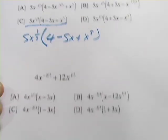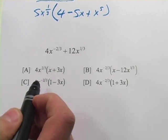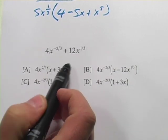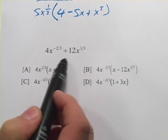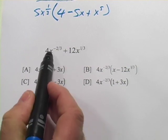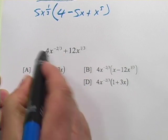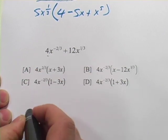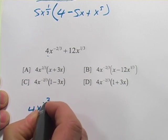Let's try one more like that. We've got 4x to the negative 2/3 plus 12x to the 1/3. So this one might be a little confusing because there's a negative exponent up here. Let's see what would happen if we tried to factor out this whole term, 4x to the negative 2/3.